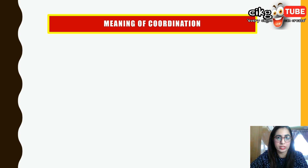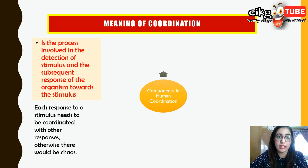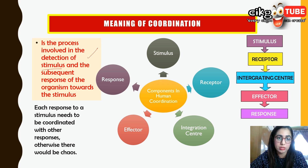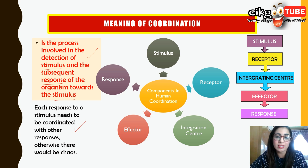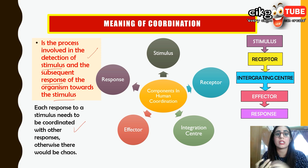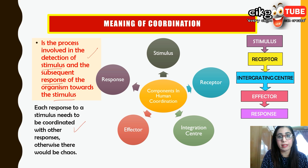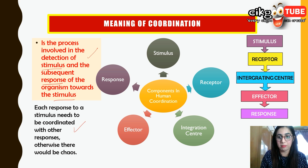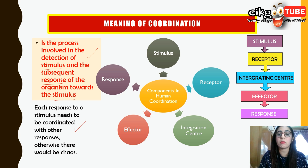Now let's look at the meaning of coordination. Coordination is the process involved in the detection of a stimulus and the subsequent response of the organism towards that stimulus. Each response to a stimulus needs to be coordinated with the others — if not, there will be too many responses and it will be chaos. For example, eating requires muscle coordination to get food into the mouth, causes chewing, swallowing, peristalsis, and coordination of glands to secrete saliva and digestive juice at the right time.